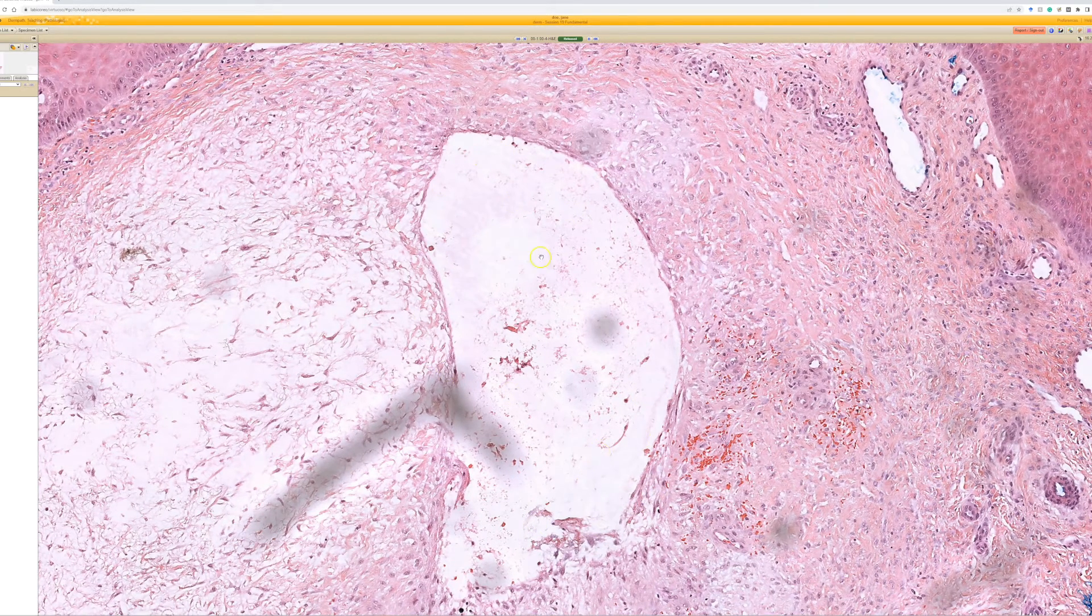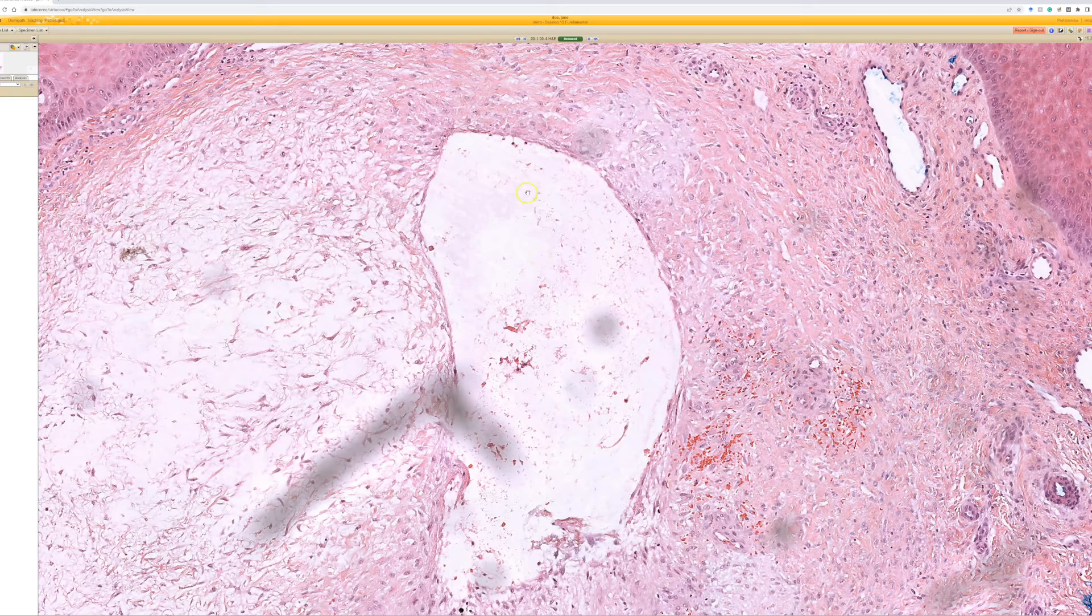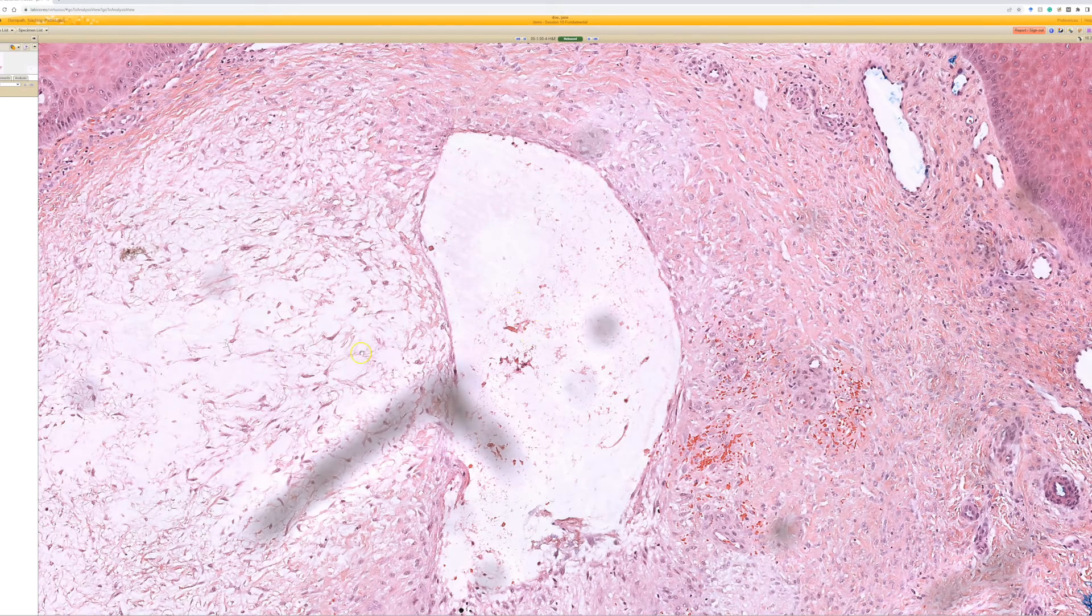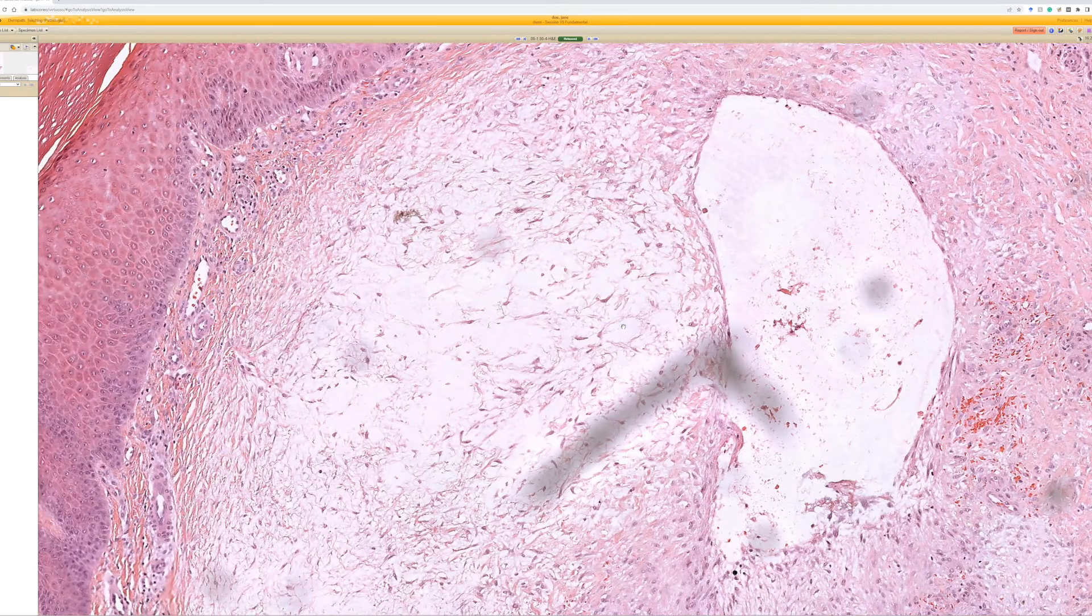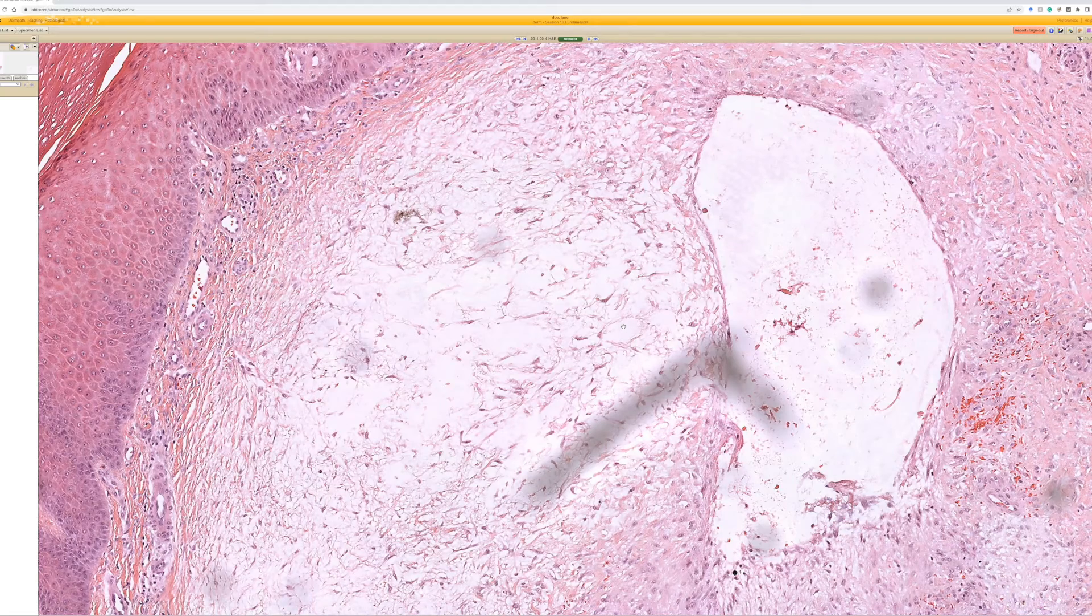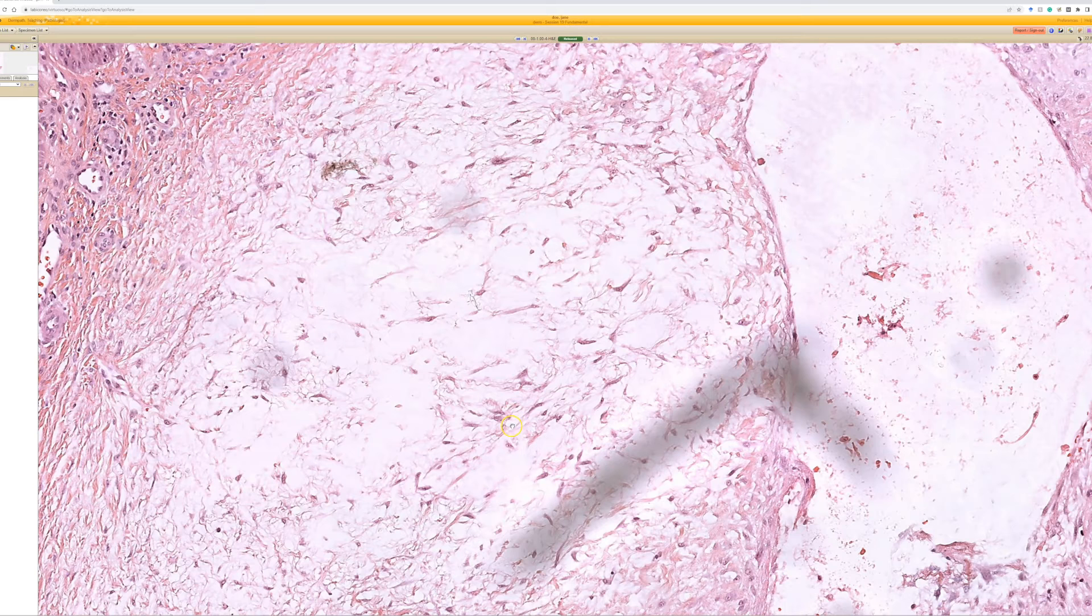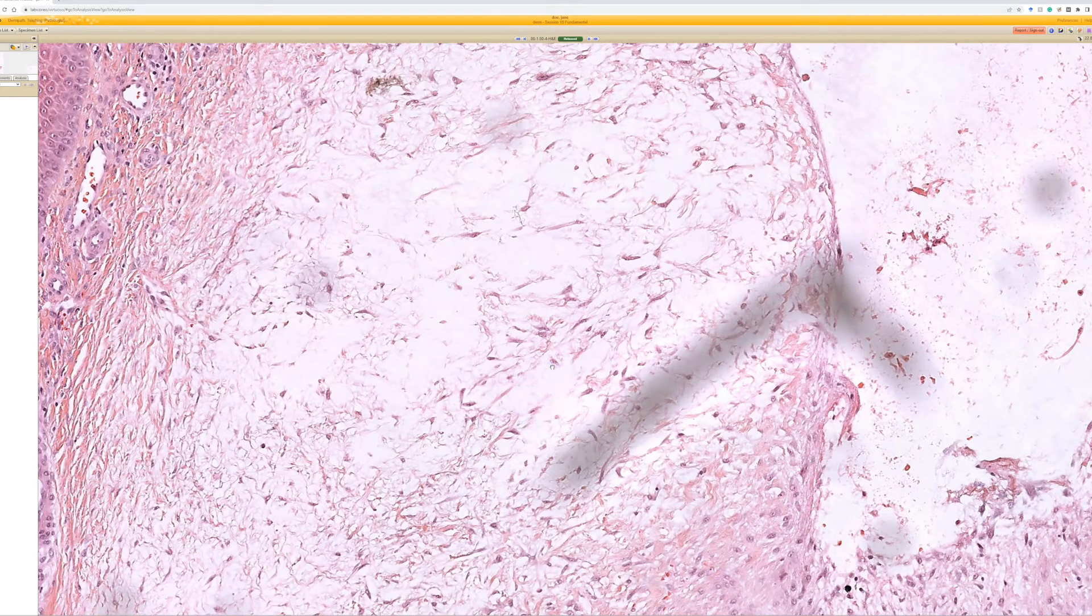A pseudo-cyst filled with mucin or mucoid material or washed out and empty. Number two, though, what happens is sometimes the mucoid mucinous material leaks out of the cyst and infiltrates the adjacent dermis. And what you get then is this loose mucoid pale dermis with floating spindle to stellate fibroblasts or myofibroblasts floating around in that mucinous material.